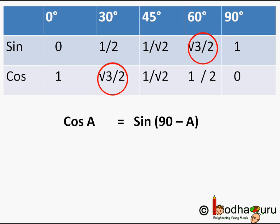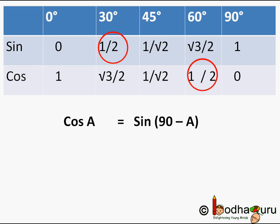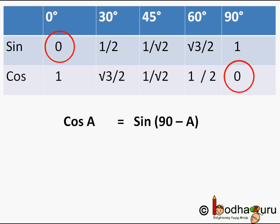cos(30°) = sin(60°) = √3/2. cos(45°) = sin(45°) = 1/√2. cos(60°) = sin(30°) = 1/2. cos(90°) = sin(0°) = 0. So we take each value from the sin row and place it in the corresponding cos position.